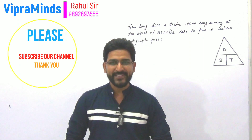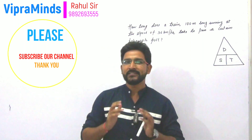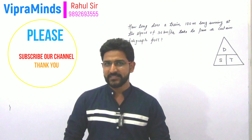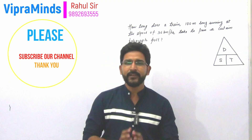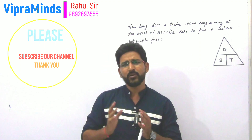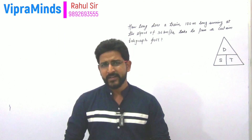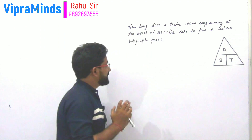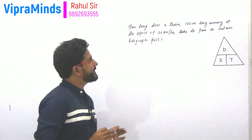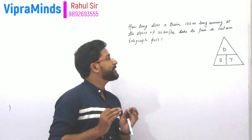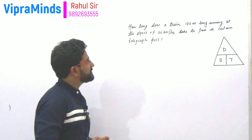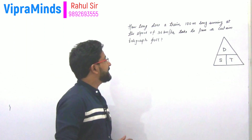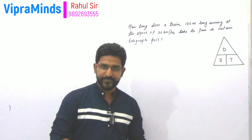Hello, welcome to Vipramain's channel. This is the second video on the Time, Distance and Speed series. Today we will see the most important question which comes in many competitive exams. It is very simple but very important: how long does a train 100 meters long, running at the speed of 36 km per hour, take to pass a certain telegraph post?